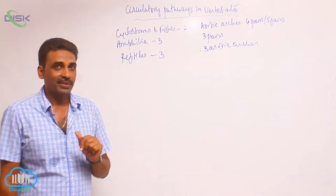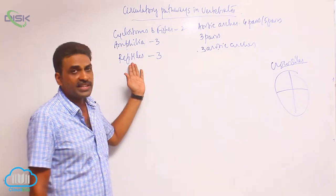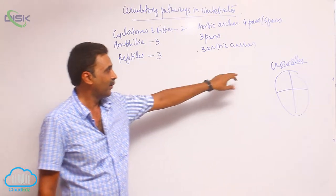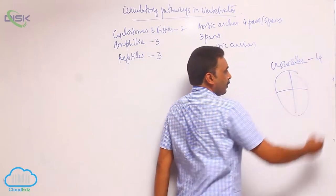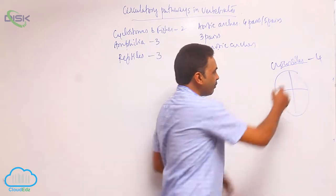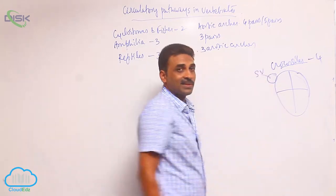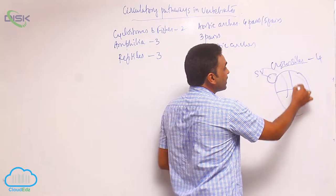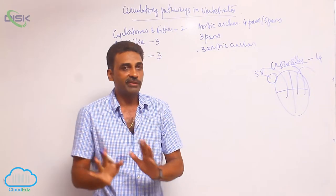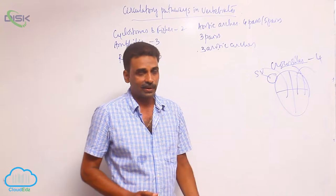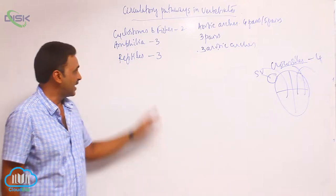In reptiles there is an exception — the crocodiles. In reptiles we saw a three-chambered heart, but in crocodiles we have a four-chambered heart, where you can see complete division between the ventricles. Associated with the heart, there is sinus venosus, and associated with the ventricles you can see three aortic arches. The difference is in the ventricles only, and since the ventricles are completely divided, complete double circulation is seen in crocodiles.